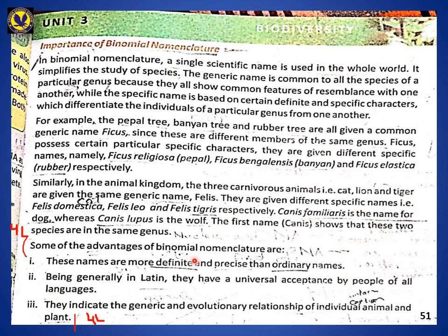Some of the advantages of binomial nomenclature: these names are more definite and precise than ordinary names. Being generally in Latin, they have universal acceptance by people of all languages — so this system is accepted everywhere. Besides, they indicate the generic and evolutionary relationship of individual animals and plants — meaning you can understand which genus an organism belongs to and what evolutionary changes have occurred.